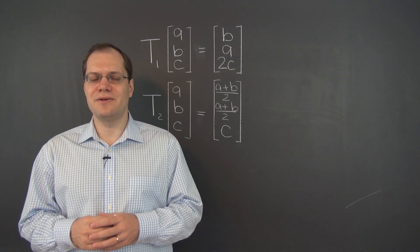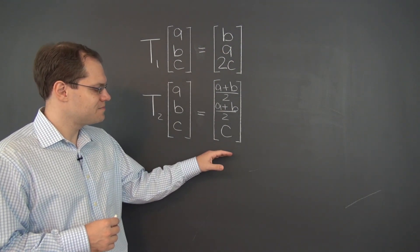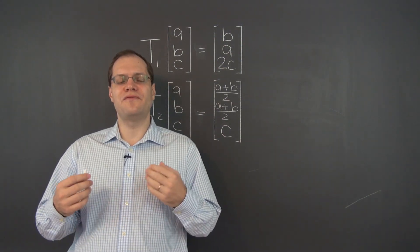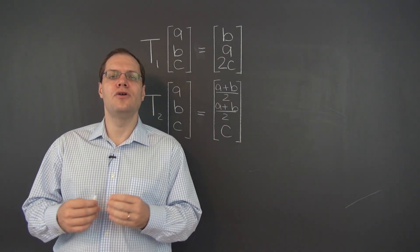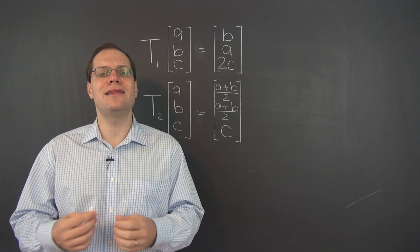So far, we have considered two examples of linear transformations in R^n. So according to the pattern we've been following in other vector spaces, you may be expecting an example of a non-linear transformation.